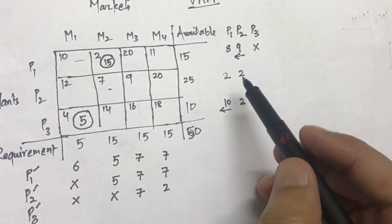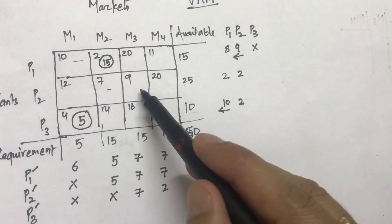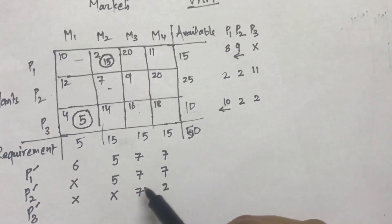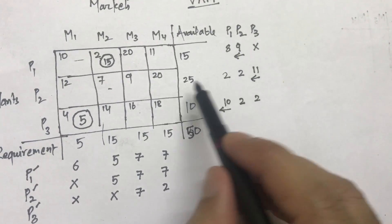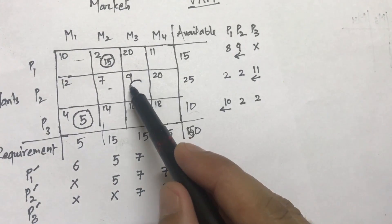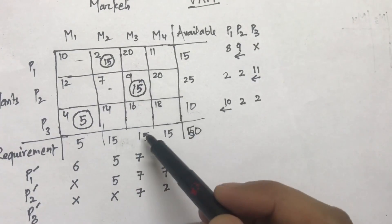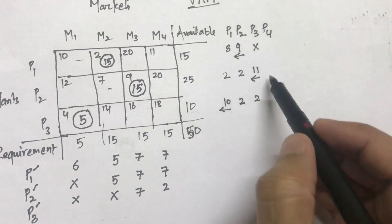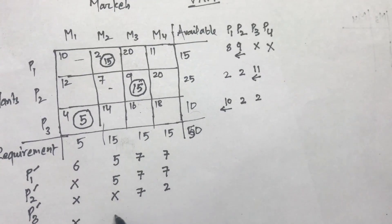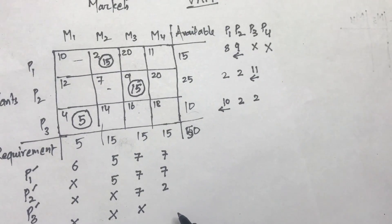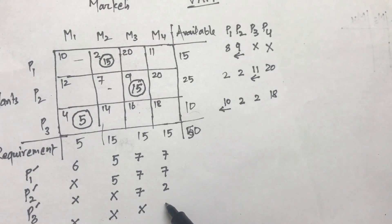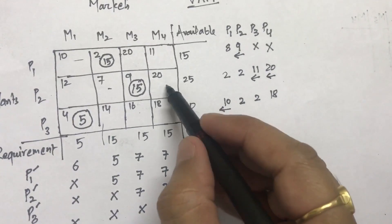For the remaining columns, excluding the two already allocated, 20 minus 9 gives 11 and 16 minus 18 gives 2. The maximum is 11, so I enter from that column and find the minimum cost cell. Since two markets are already done, I look at the minimum of 9 and 20, which is 9. I allocate the minimum of supply and demand, which is 5 units, completing that allocation.